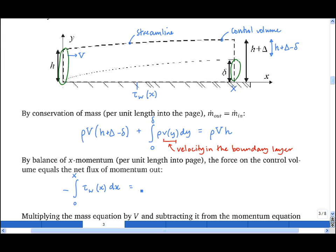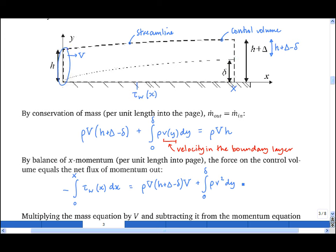Considering the momentum flux out first: there's the momentum flux out in the free stream, equal to the mass flux out — rho big V times (h plus big delta minus little delta) — multiplied by the free stream velocity. We add to that the momentum flux out in the boundary layer: the integral from y equals zero to delta of rho v squared dy. Then we subtract the momentum flux in on the left-hand side, which is minus rho big V times h times V.